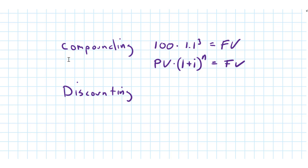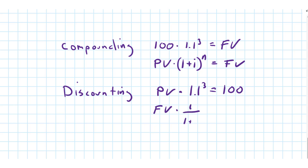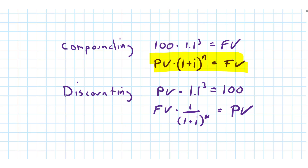And if we are discounting, we're solving for the present value: present value × 1.1^3 = 100, or equivalently: future value × (1 / (1 + i))^n equals the present value. So if we would like to understand how much money we'll have in three years' time if we deposit $100 today, we use the compounding formula. And if we'd like to understand how much we have to deposit today so we will have $100 at the end of year three, we use the discounting formula.